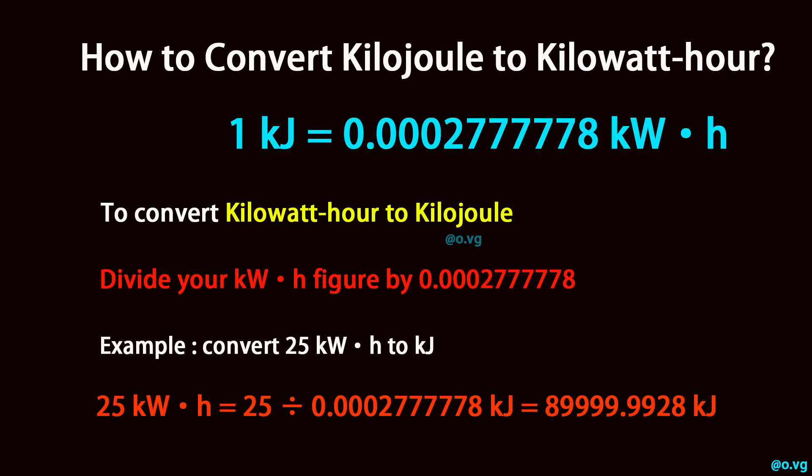To convert kilowatt hour to kilojoule, divide your kilowatt hour figure by 0.0002777778. Example: